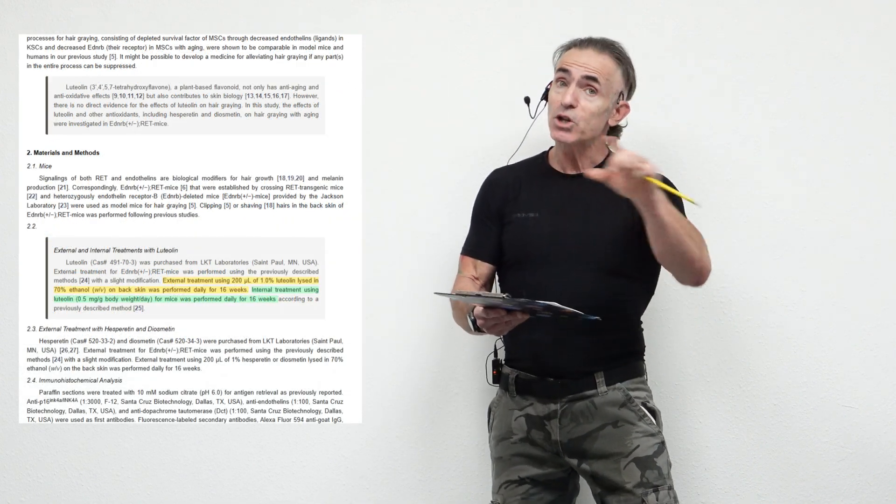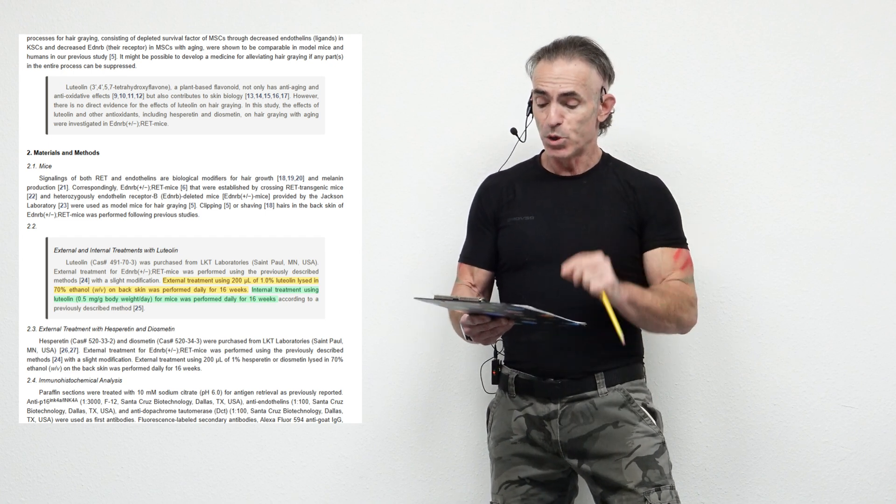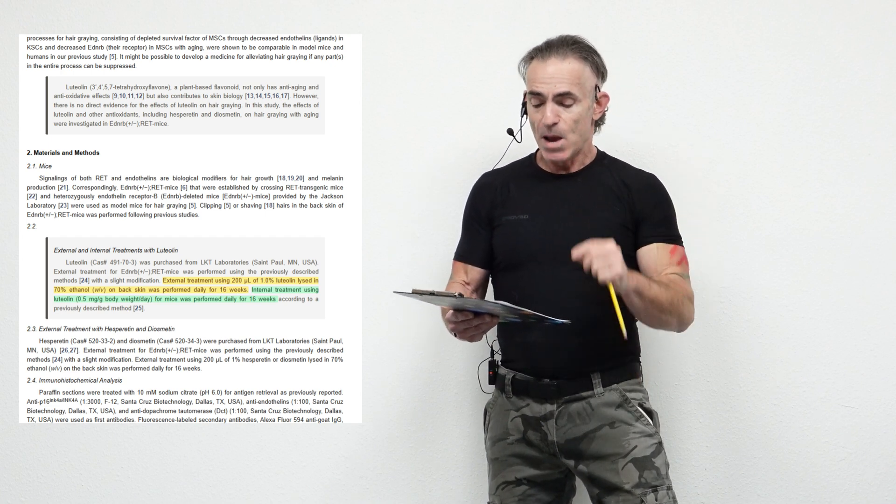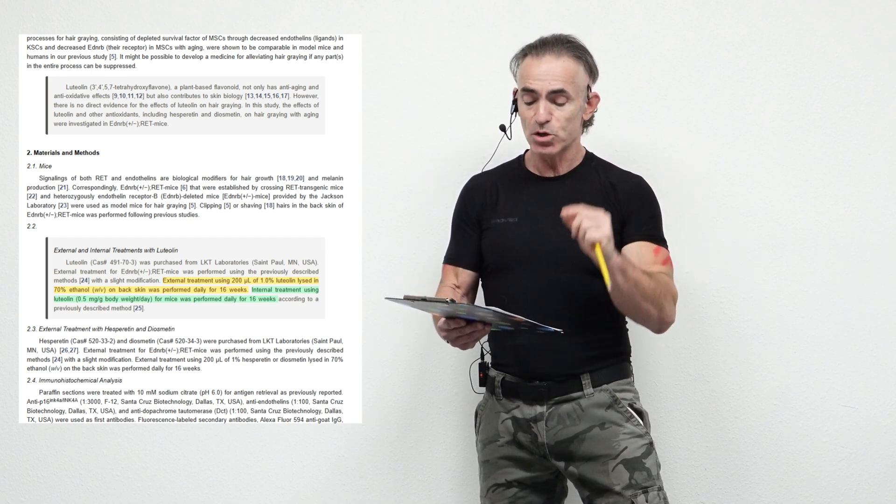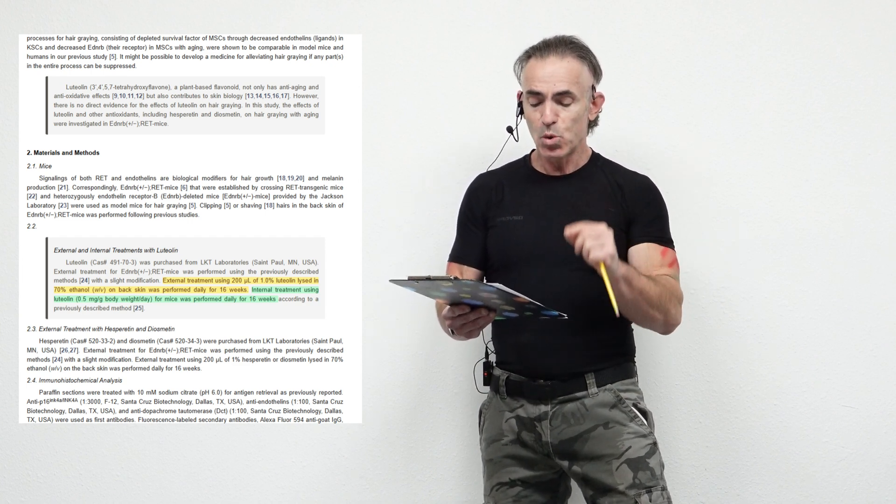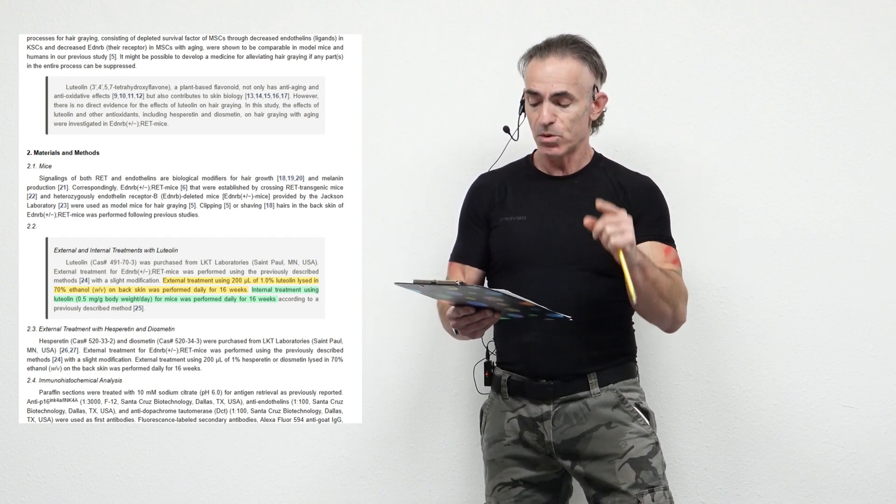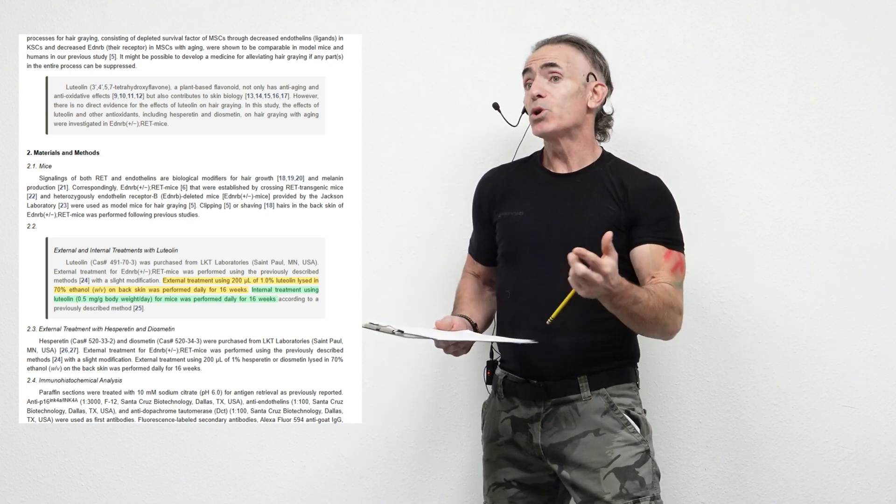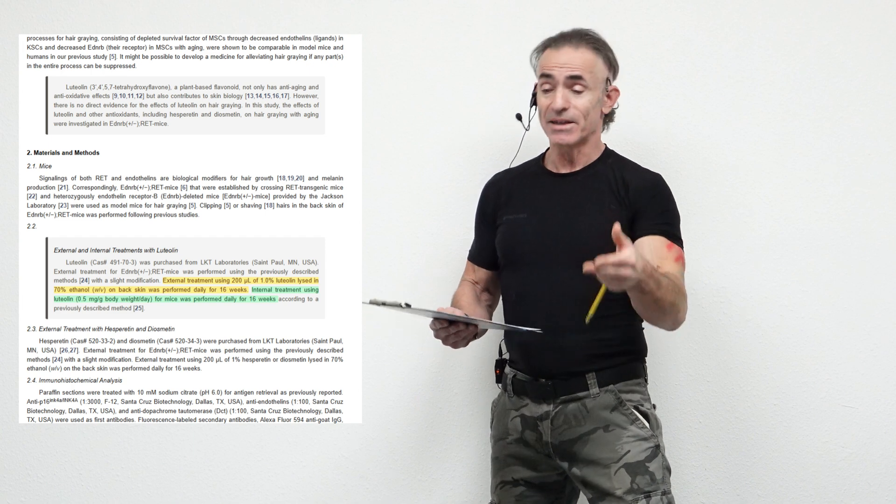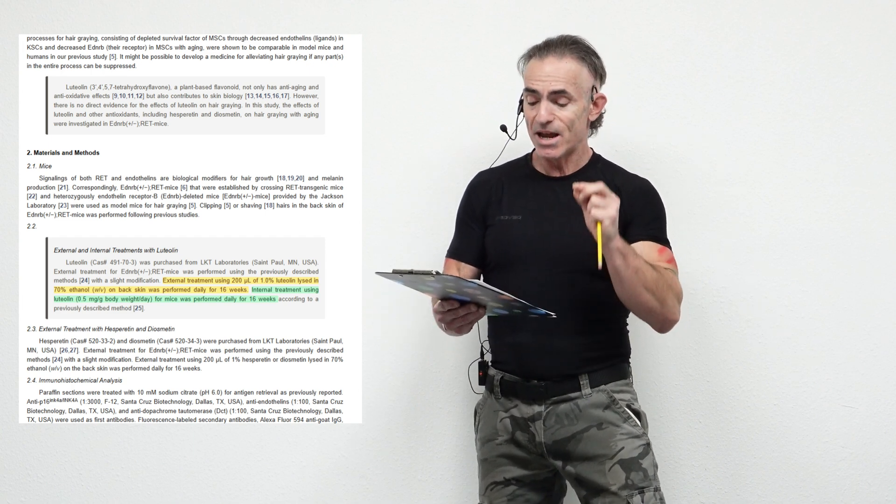There we have external and internal treatments both discussed in this one paragraph. Luteolin was purchased. It was performed using the previously described methods with a slight modification. External treatment using 200 microliters of 1% luteolin, lyced. It's like dissolved, which is quite interesting as well. You don't think of luteolin just dissolving like sugar or something like that. But lyced is 70% ethanol,